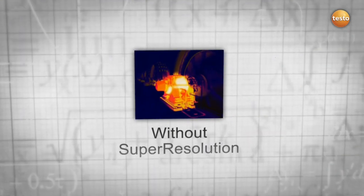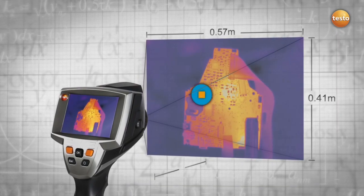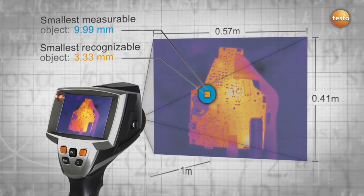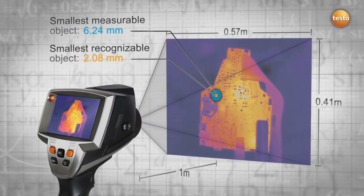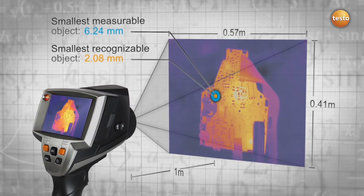The super-resolution technology leads to more meaningful thermal images. But that's not all. As your smallest measurable object decreases in size, you are still able to detect more details while maintaining the same distance to your measured object.